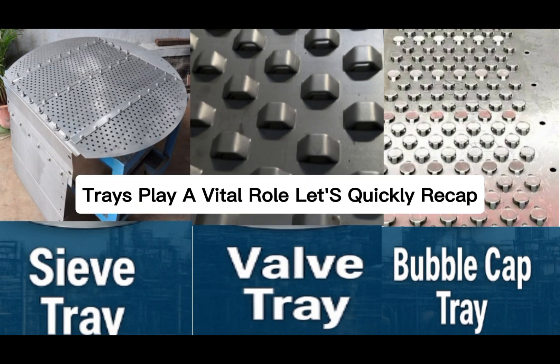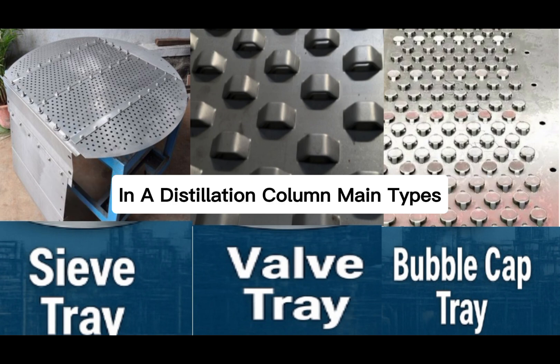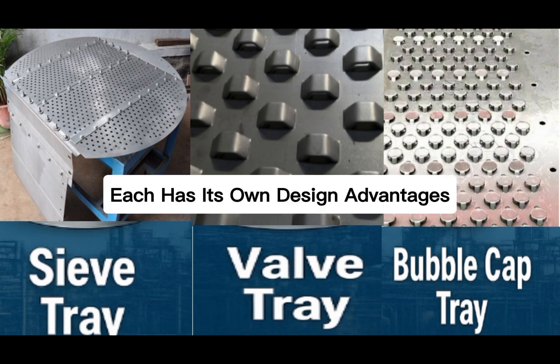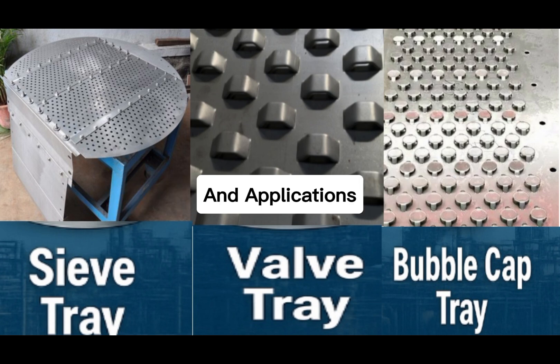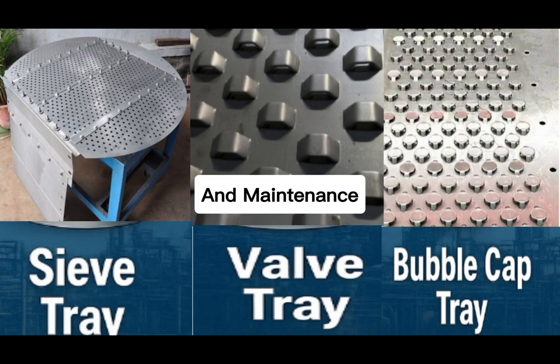Let's quickly recap. Trays provide contact between vapor and liquid in a distillation column. The main types are bubble cap, sieve, and valve trays. Each has its own design, advantages, and applications. The goal is efficient separation with minimum energy loss and maintenance.